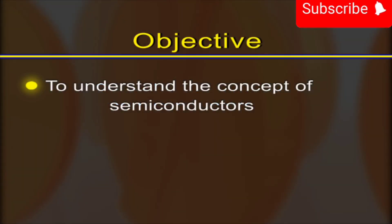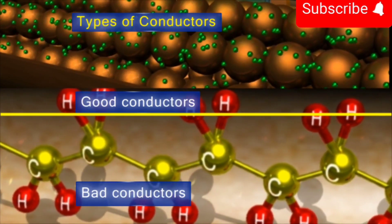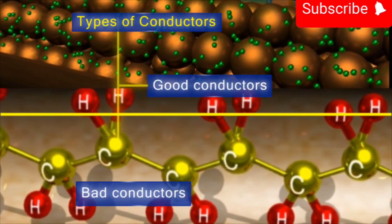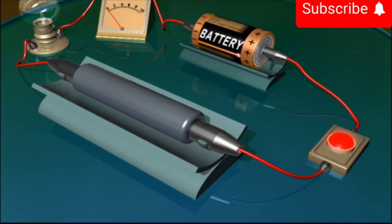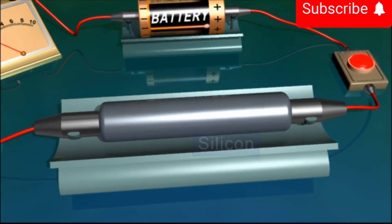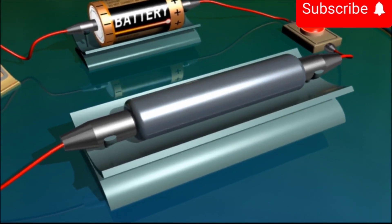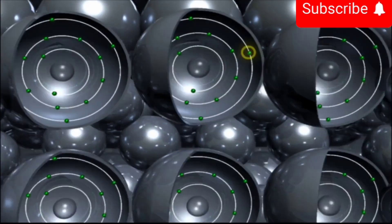The objective is to understand the concept of semiconductors. Between the extremes of good conductors and bad conductors, we have an important group called semiconductors. Consider a substance like silicon at room temperature. Only a few of its valence electrons are able to break free from their bonds.